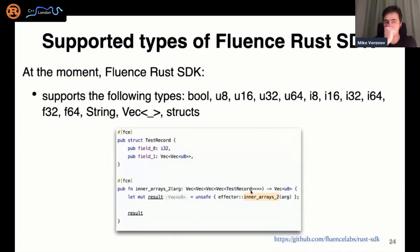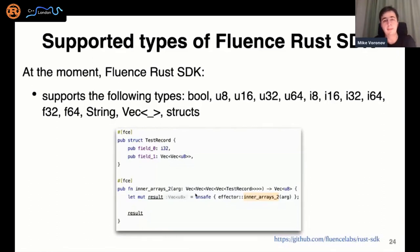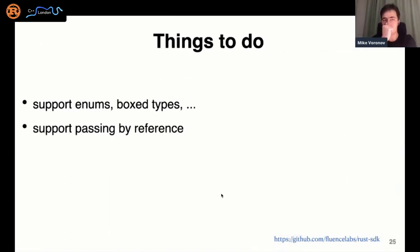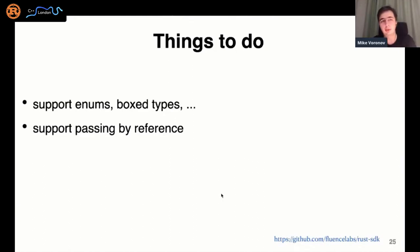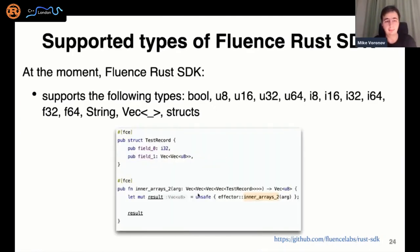Currently we support the following types: all integers, all floating points, strings, vectors, and structures that contain all such types. Recursive structures and recursive arrays are also possible. We have several limitations since we started FCE about five months ago. The two main things to add to the Rust SDK are: support for enums and boxed types like RC and Box, and support for passing by reference — currently everything is passed by value.